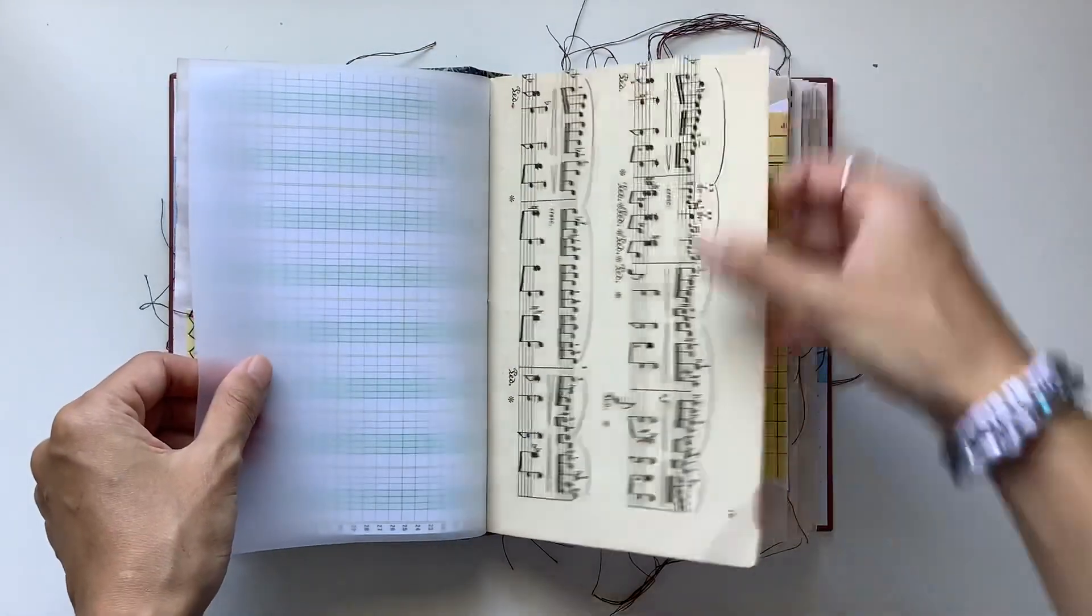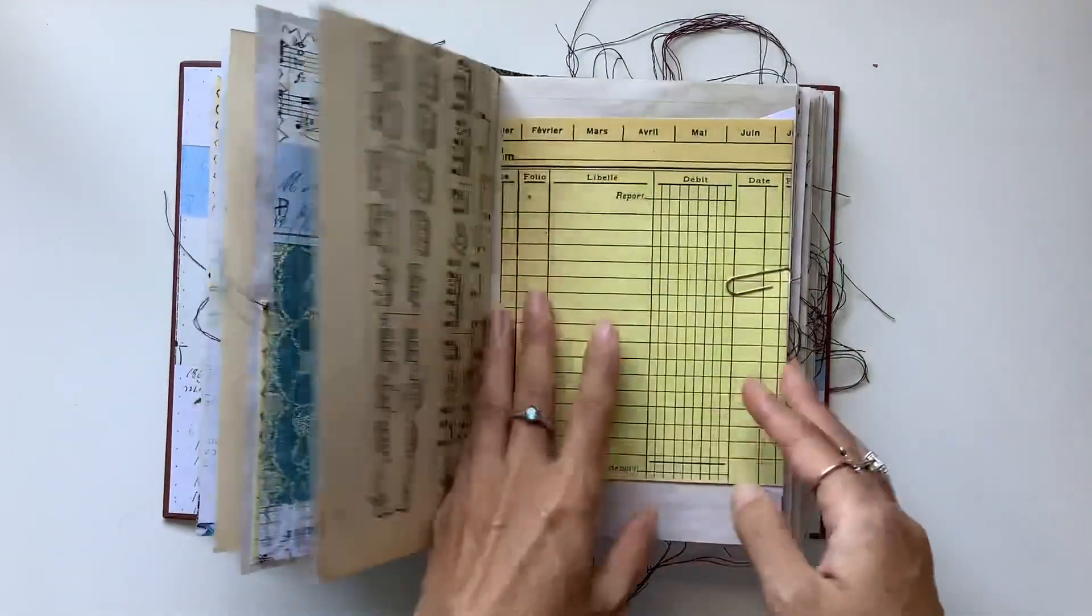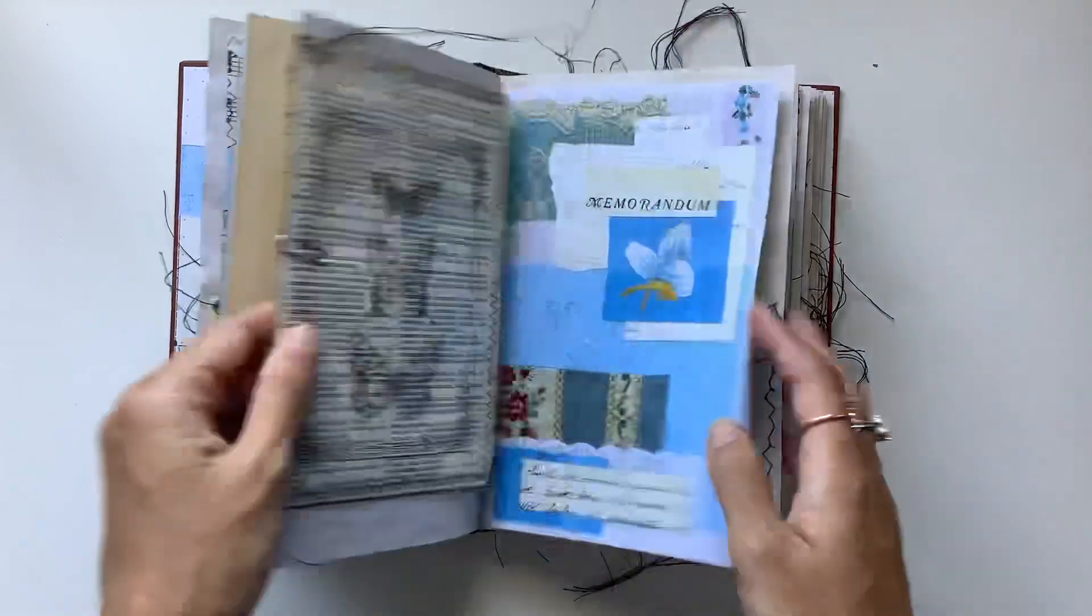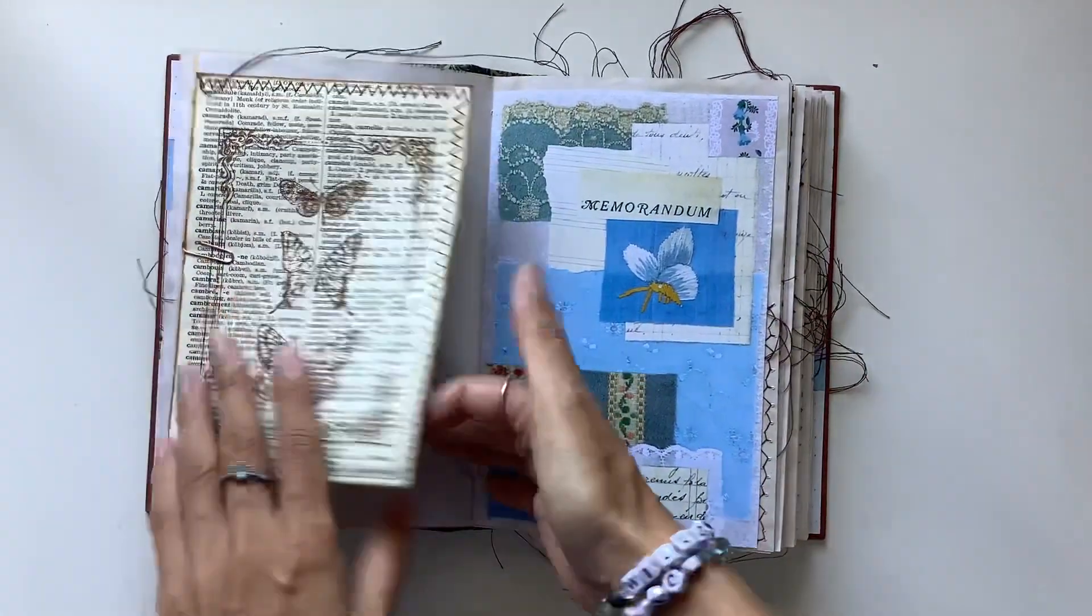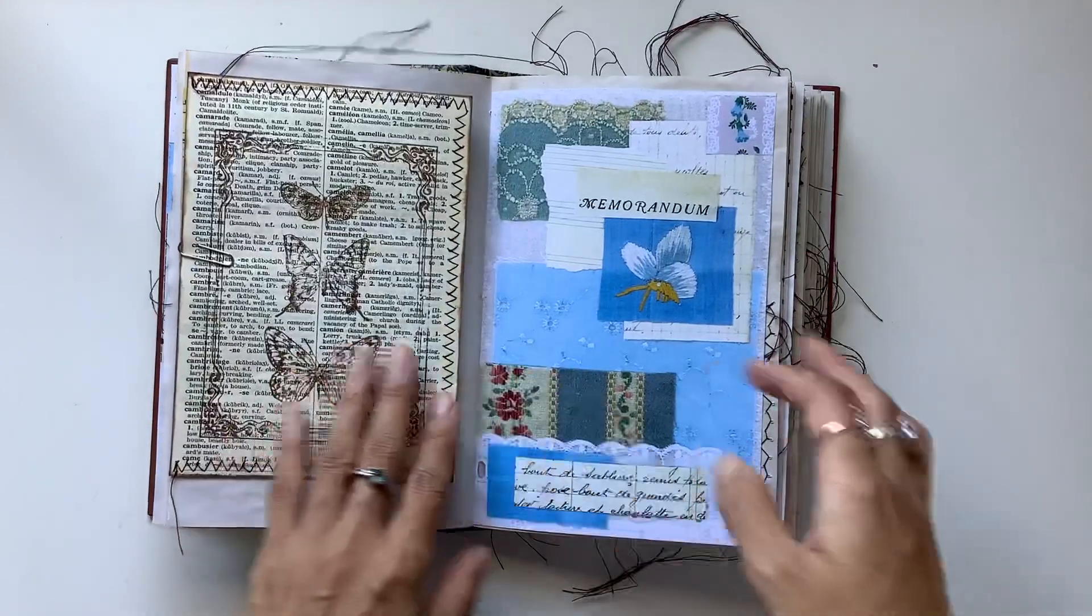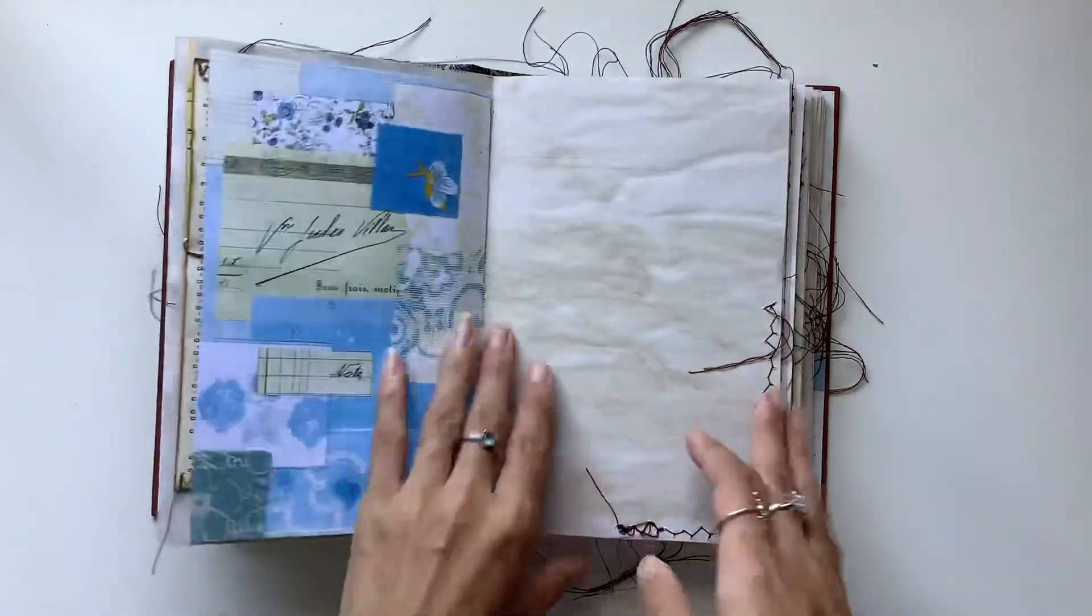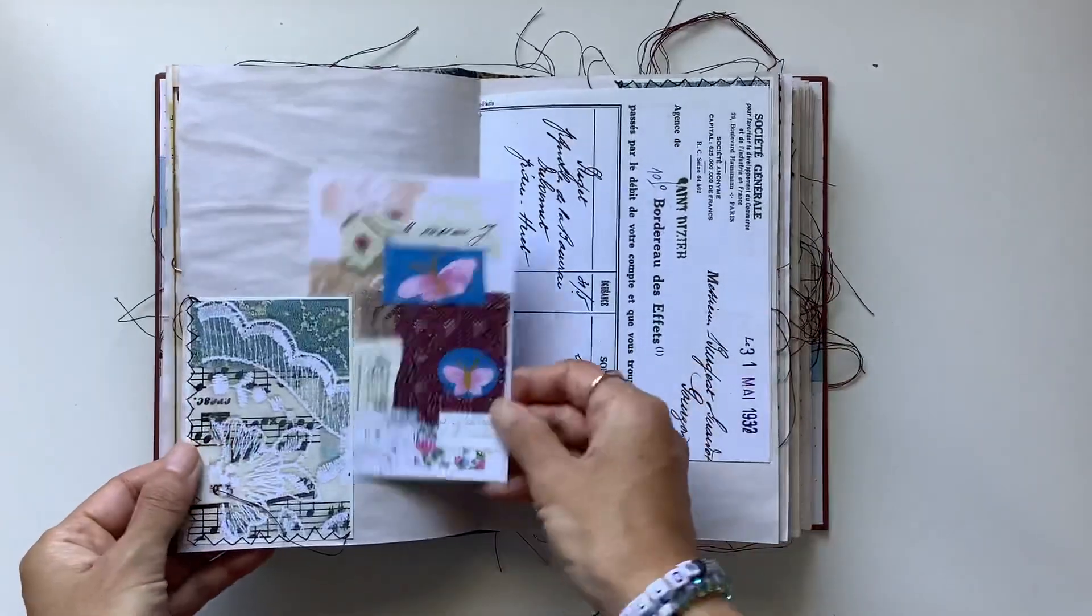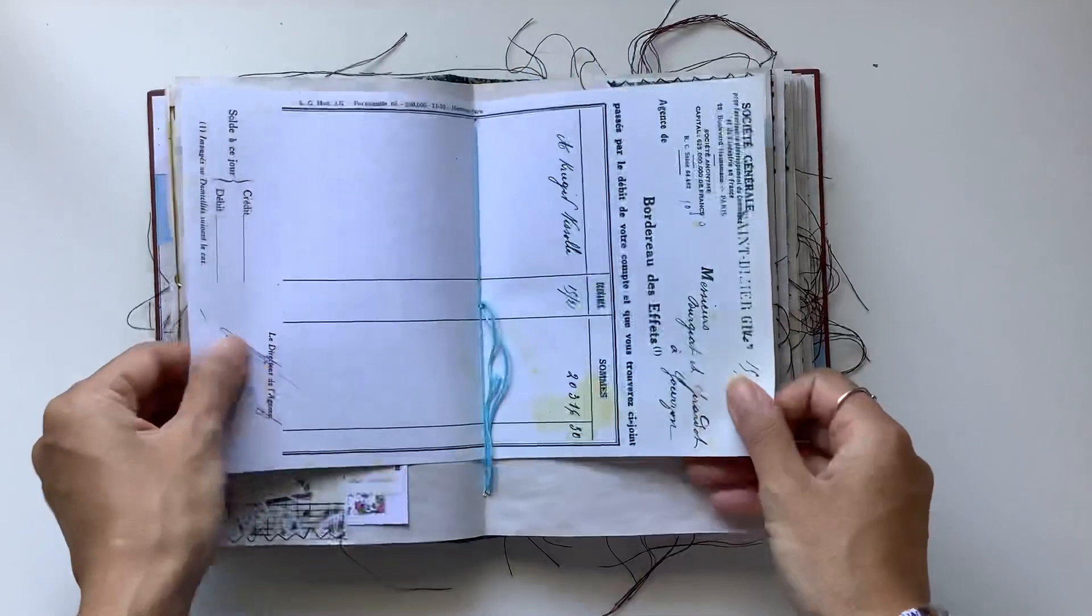So we've got tracing paper and this is vintage music paper. I actually paper clipped in a receipt there that can fold out for some more journaling space. This is using vintage French dictionary that I stamped on. So that's just an envelope that can be flipped open.